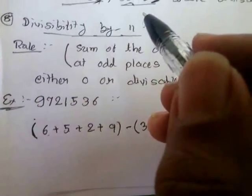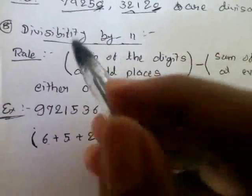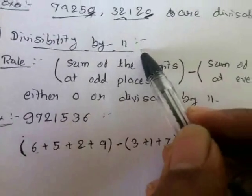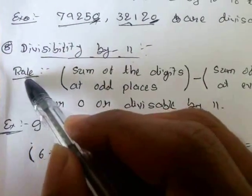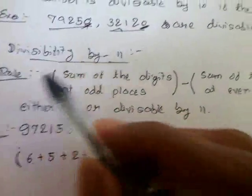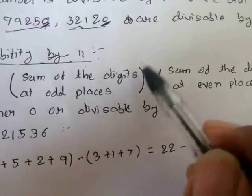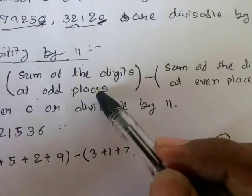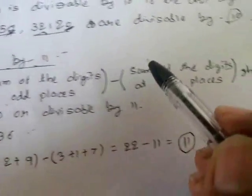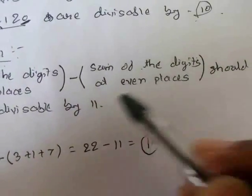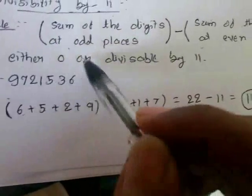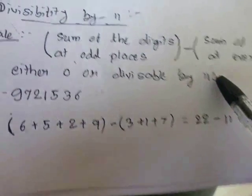The most important rule is to check if a number is divisible by 11. The rule says the sum of the digits at odd places minus the sum of the digits at even places should be either 0 or divisible by 11.